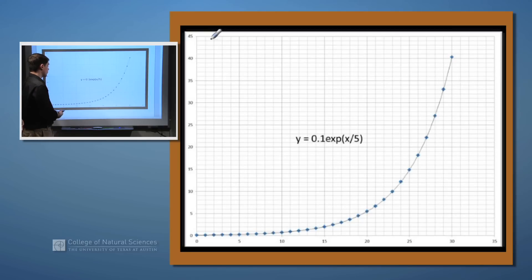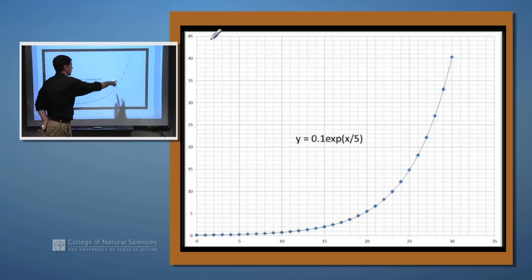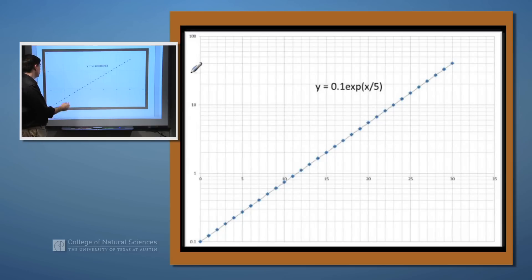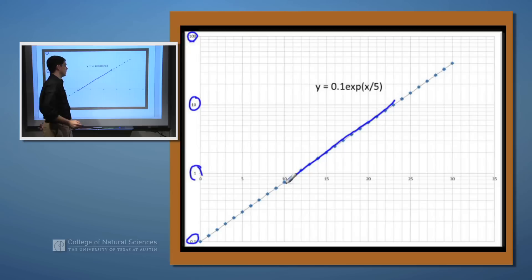For an exponential growth for instance we can have the same exact concept. The equation of this line is 0.1 times e to the x divided by 5. So as we increase our x value we go up the curve and again over on our y-axis we'll see that all of these values over here are just increments of 5. If we move forward we'll see that using the semi-log paper again we have the 1, 10, 100 down at the bottom, we start at 0.1, and again we get this nice straight line to come out.